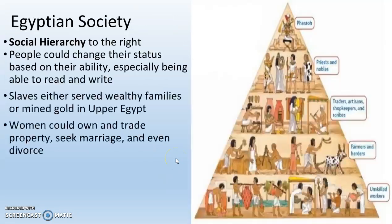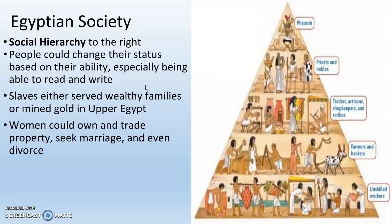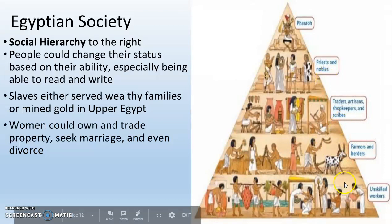Egyptian society is very similar to Mesopotamian society. We have the king or pharaoh at the top, then priests and nobles, then traders, artisans like blacksmiths, shopkeepers and scribes, then farmers and herders, and finally unskilled workers as well as slaves. The nice thing about Egypt is that people could actually change their social status based on their ability. If they could learn to read and write, they could move up — a farmer's child might become a scribe, and their children might become priests. So you could actually move up and down in ancient Egypt.